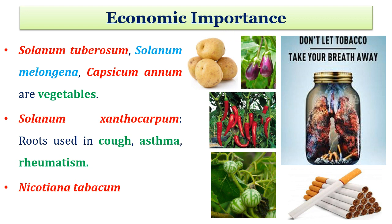Family Solanaceae has many economic importances. As vegetables: Solanum tuberosum — potato; Solanum melongena — brinjal or egg plant; Capsicum annuum — chili. Solanum xanthocarpum roots are used for cough and asthma, making it a potential medicinal plant. Nicotiana tabacum — tobacco plant — has many economic values, but its products such as tobacco and cigarettes are harmful and addictive.